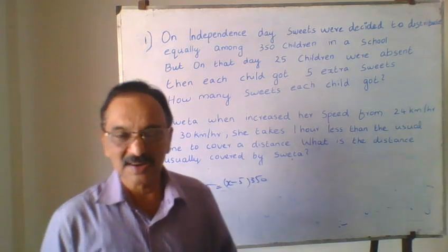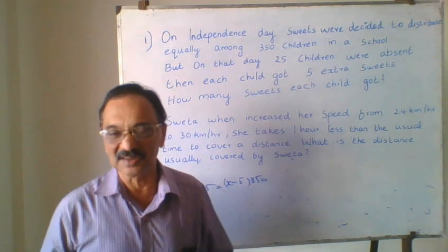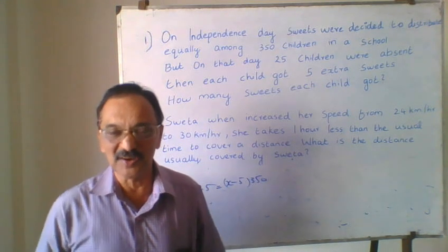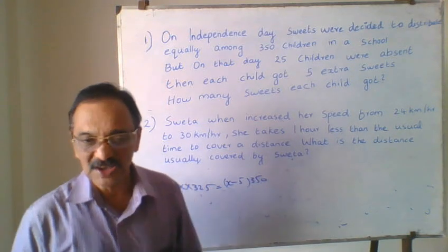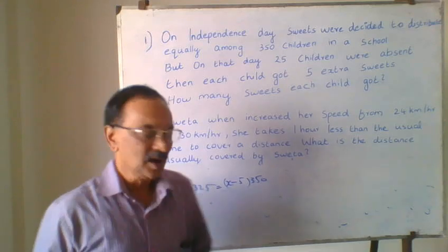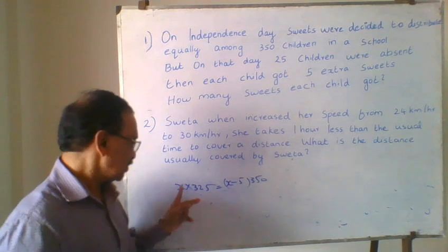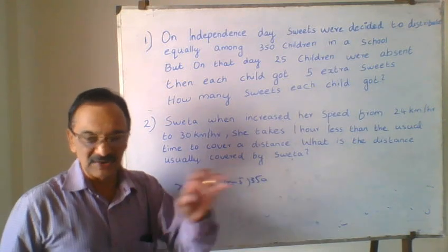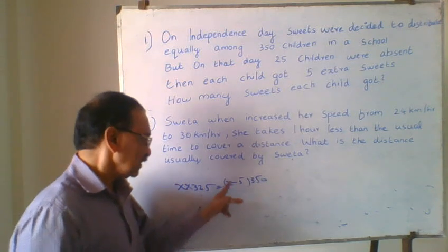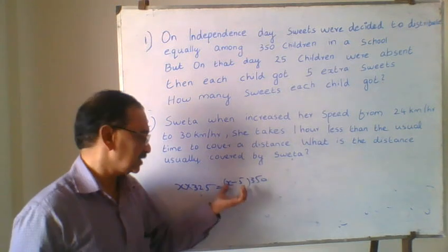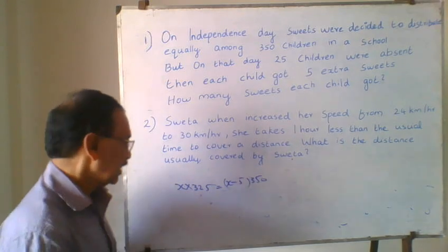We can solve this by writing a simple equation, taking x as the number of sweets each child was originally supposed to get — as the conventional method does. Now there are only 325 students present, and the equation is: x × 325 = (x + 5) × 350.